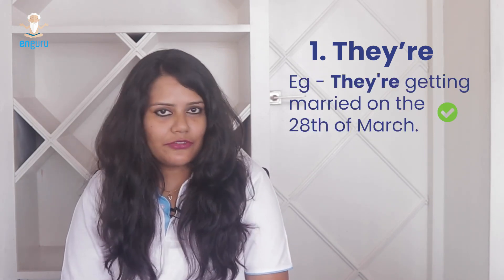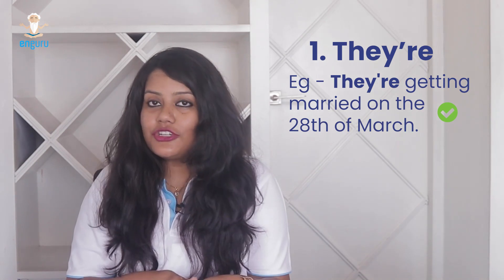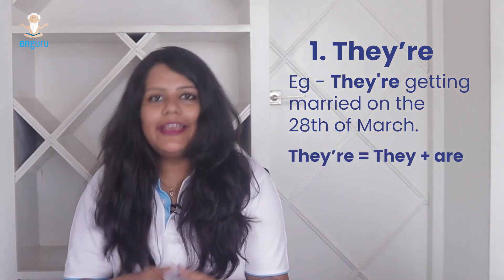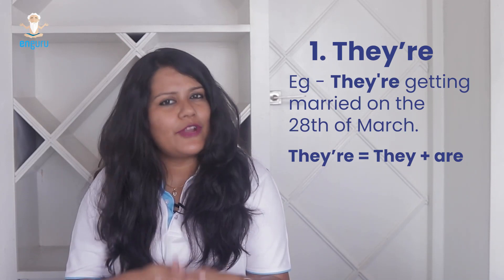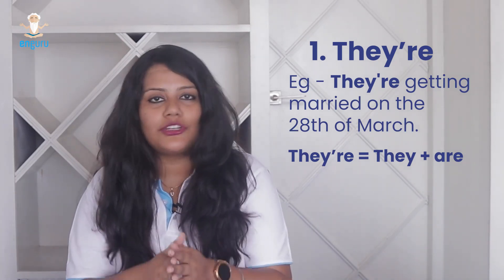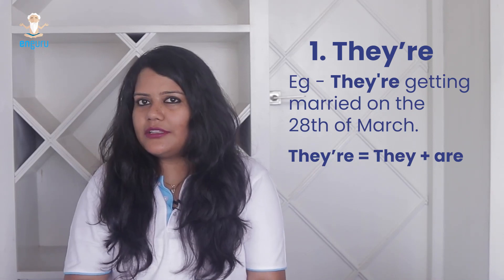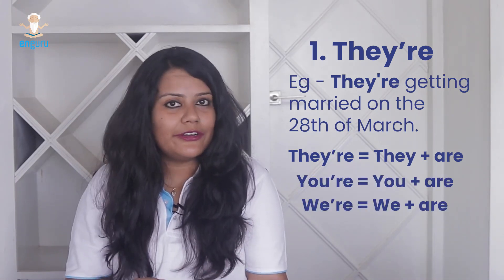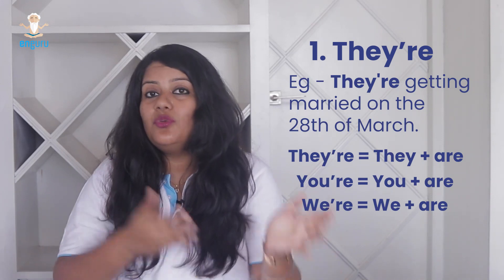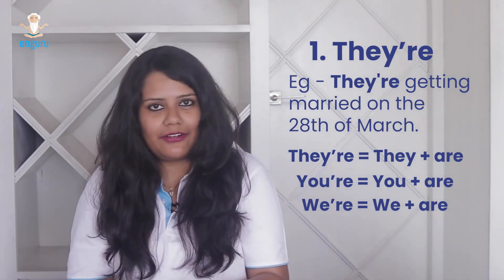The third word is 'they're'. For example, they are getting married on the 28th of March. Here, they're is a contraction of the words they and are, and the sentence is in the present continuous tense denoting a planned future event. This is similar to other words like you're or we're, which are again a contraction of you and are or we and are.